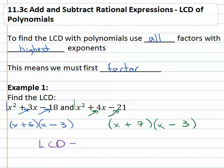For our least common denominator then, or least common multiple, we need to represent all factors with highest exponents. Well, we don't have any exponents here, so we simply need all factors.